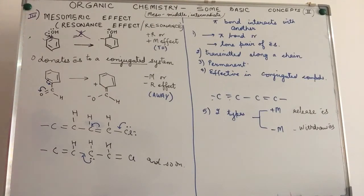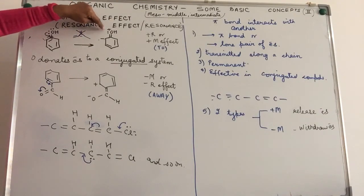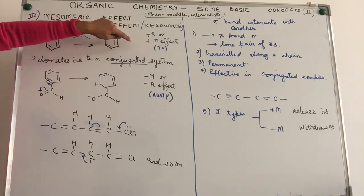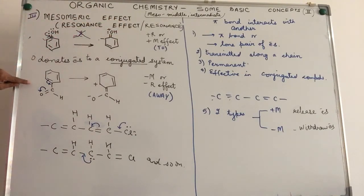Because of the donation of lone pair of electrons by the oxygen atom, this is what we call as mesomeric effect. Since this group is releasing electrons towards the conjugated system and in turn acquiring a positive charge, we call it as the plus M or the plus R effect.